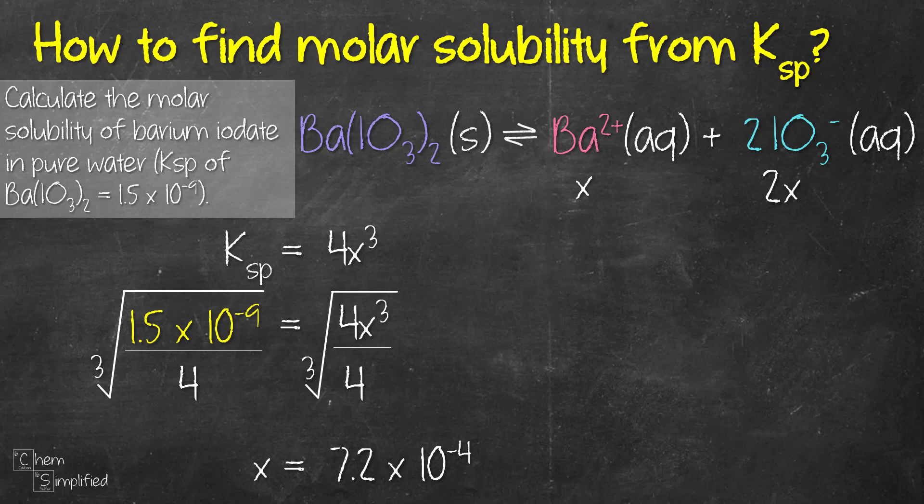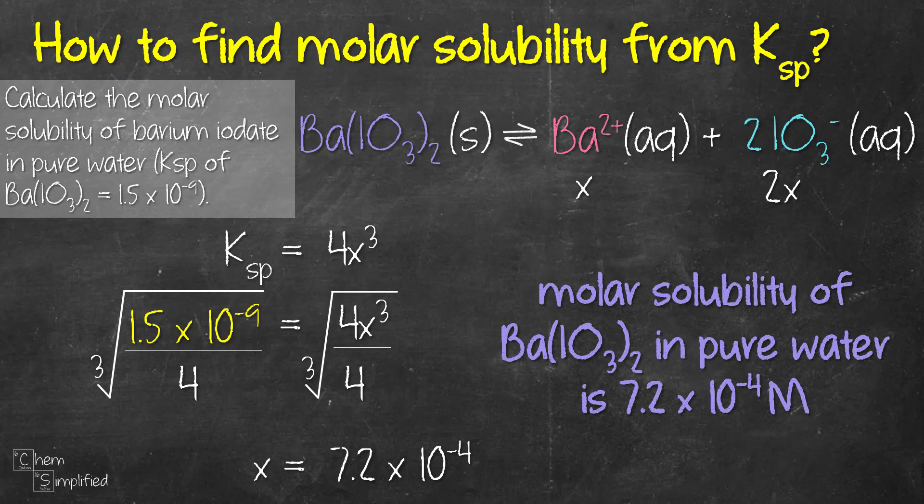Since 1 mole of barium iodate will produce 1 mole of barium 2 plus ion, that means the concentration of barium iodate will be the same as barium ion which we set as x. Therefore the molar solubility of barium iodate is 7.2 times 10 to the power of negative 4 molar. Don't forget the unit for that molarity which is capital M or moles per liter.